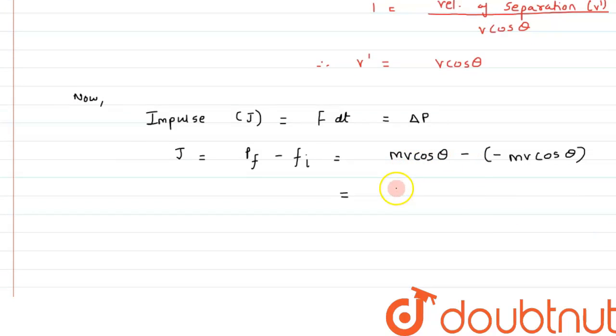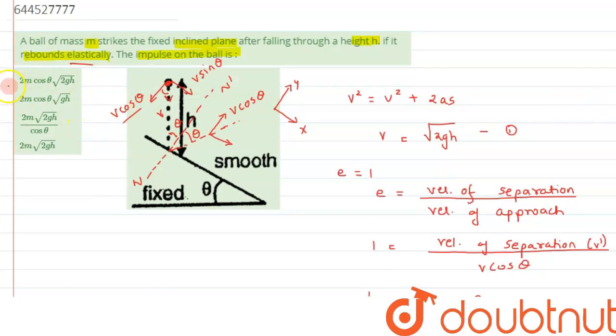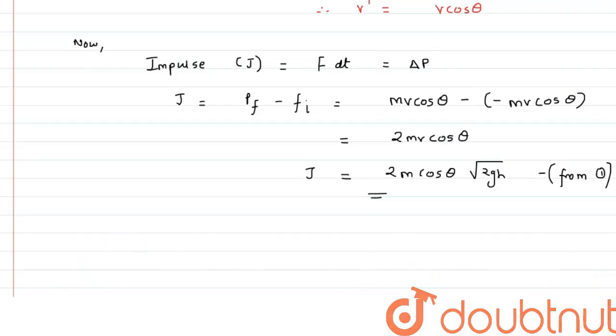So we can say this can be written as 2 M V cos theta and we have calculated the value of V as under root 2gh from equation 1. So from here we can say the value of impulse that the ball will experience is given by the formula 2 M cos theta under root 2gh and this matches with option A. So I hope you have understood the concept clearly and thank you for watching.